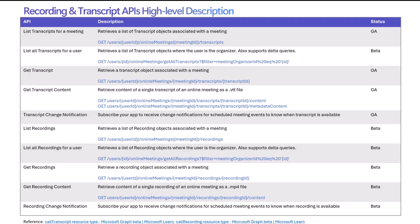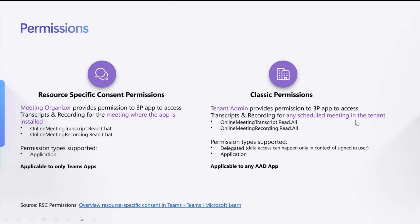The good news is all these APIs are available — I'll also share the documentation after the meeting so you can try this out. In terms of permissions required to call these APIs, we support two types. One is what we call resource-specific consent permissions, or RSC, which I showed you in the scenario walkthrough, where a meeting organizer could provide permission to the third-party app to access the transcript and recording for the particular meeting where the app was installed. There's also a broader level of permission — classic permissions — where a tenant admin could give permission to an app, and then they could access the transcript and recording for any scheduled meetings happening in that tenant.